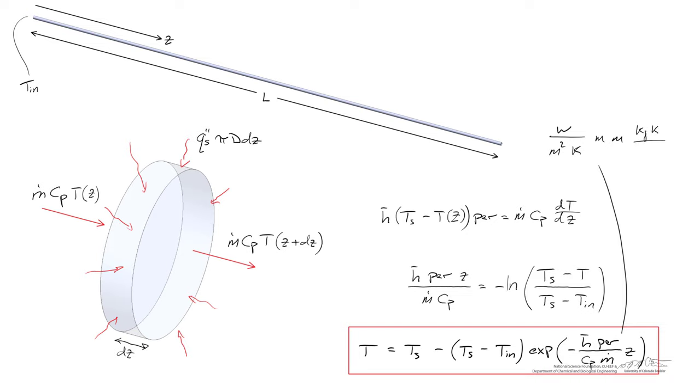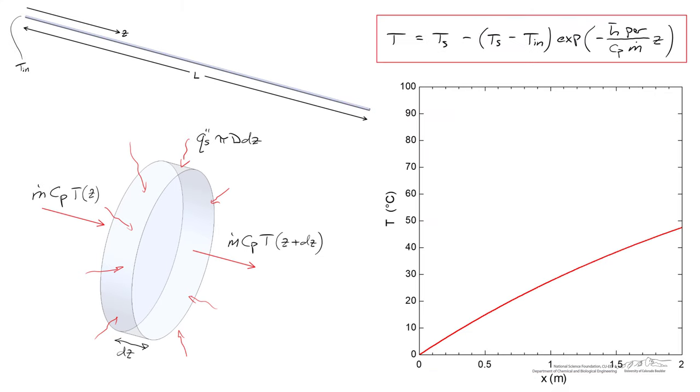The heat capacity, one over the heat capacity, is kilogram Kelvin per joule, and one over the mass flow rate is seconds per kilogram. Canceling out units, we're left with a joule per second is equal to a watt, and that cancels out with a watt in the numerator. So this is dimensionless. We're good on the units.